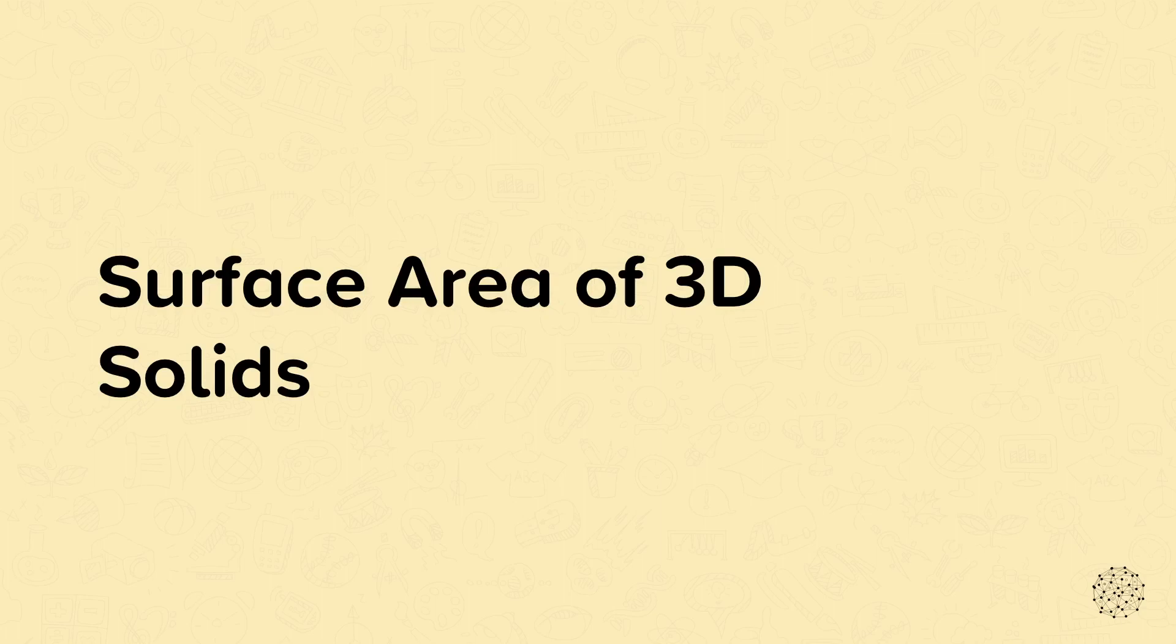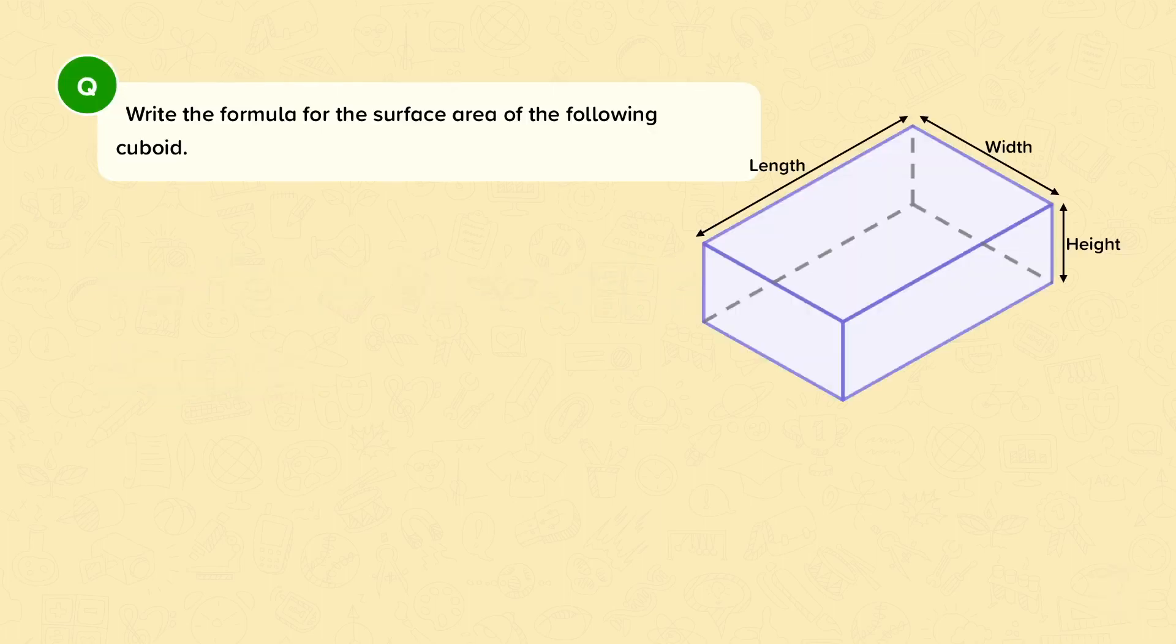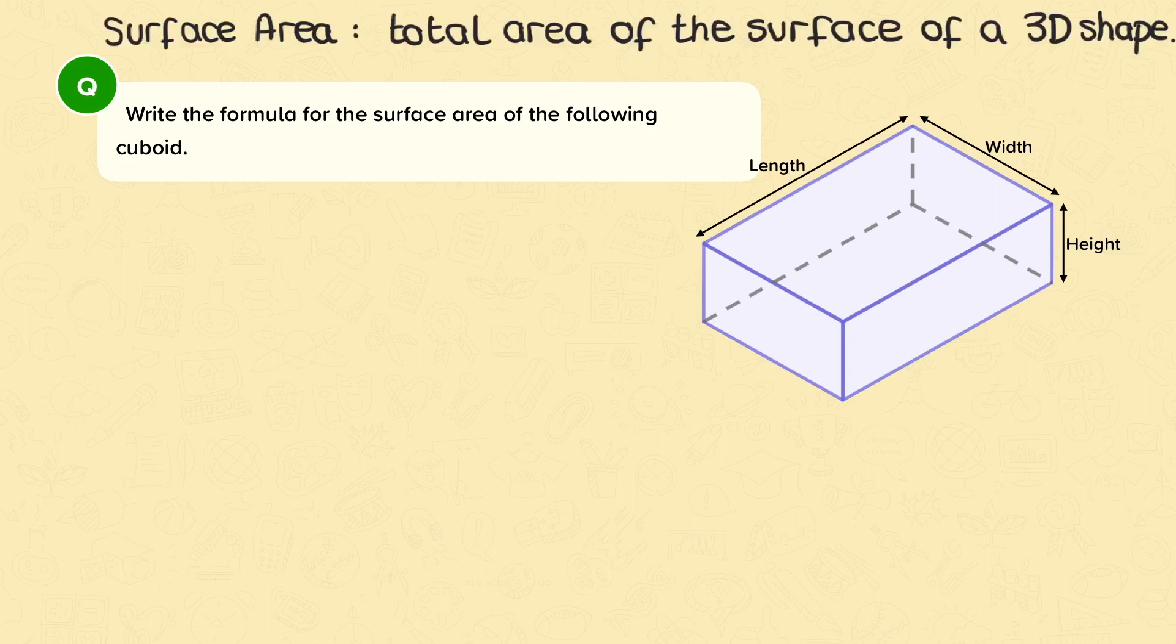Surface area of 3D solids. Write the formula for the surface area of the following cuboid. The surface area is the total area of the surface of a 3D object, so all the faces added up.